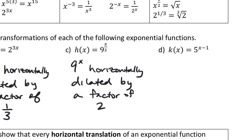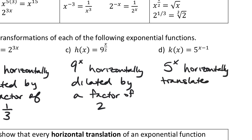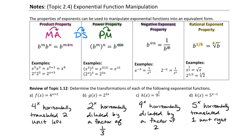For letter d, what was the original function? 5 to the x. And what have we done to it? We have horizontally translated it one unit to the right. That's our review section: we reviewed exponent rules and topic 1.12 transformations. We only reviewed horizontal transformations because that is a really important moment for exponential function manipulation.